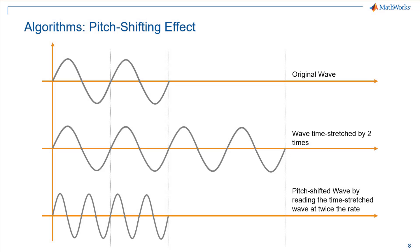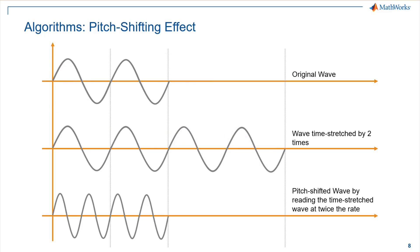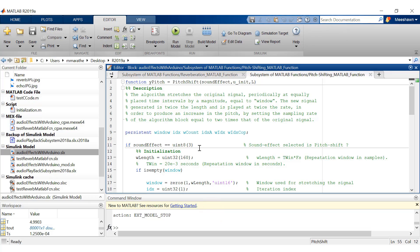Now let's move on to our final algorithm — the pitch shifting effect. This effect is achieved by stretching or compressing the sound clip and then playing back the resulting signal at a rate equal to the stretch or compression factor, resulting in an increase or decrease in pitch respectively. Stretching is achieved by fixing small window lengths at equal intervals of the sound clip and extending it by appending the window at those intervals — essentially duplicating the sound clip at equal time intervals. The resultant sound clip has twice the number of samples, and upon playing it at twice the sample rate, it plays for the same time duration but with an increase in pitch. One can also remove audio samples at equal intervals and play back at a slower rate to obtain a reduction in pitch.